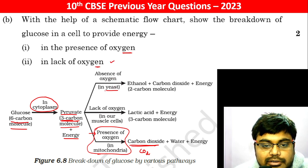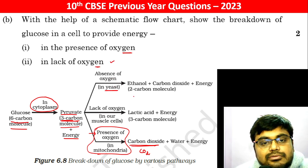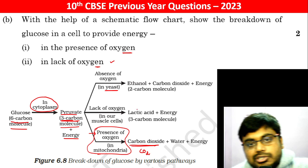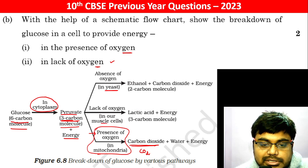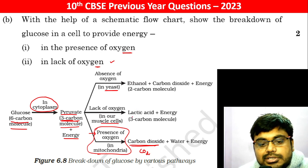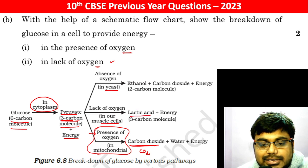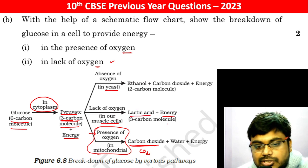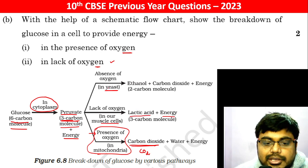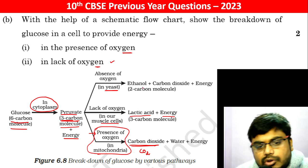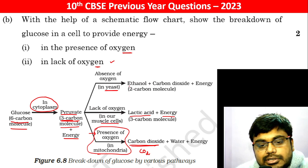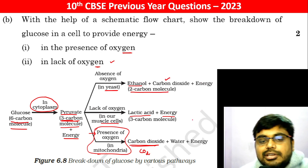In certain microorganisms which do anaerobic respiration, and also in our muscle cells, there is the formation of lactic acid and energy, which is again a three-carbon molecule. In yeast, it breaks into ethanol, which is a two-carbon molecule, plus carbon dioxide and then energy.